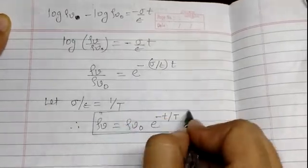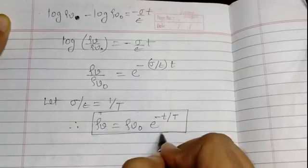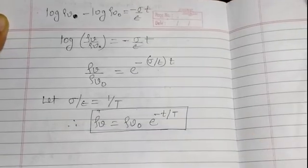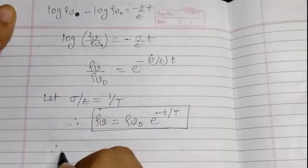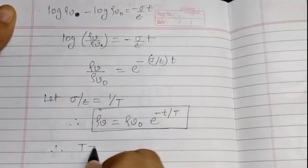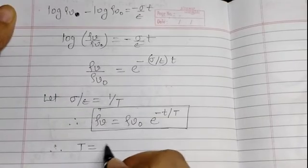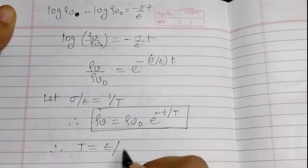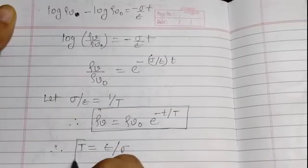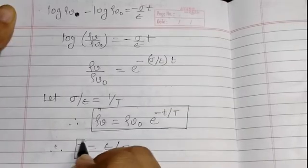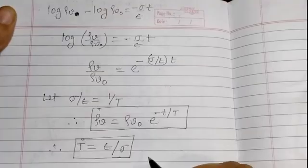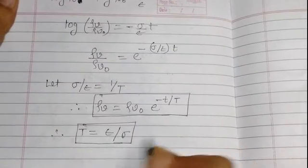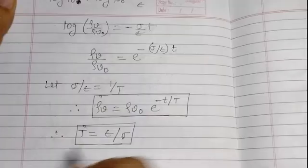Therefore rho-V equals rho-V-zero times e raised to the power of minus t over T, where T equals epsilon over sigma. This is the final equation for relaxation time, and T equals epsilon over sigma is known as the relaxation time constant.